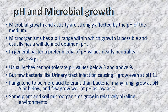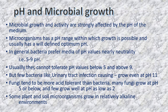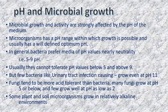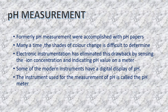Microbial growth and activity are strongly affected by the pH of the medium. Each microorganism has a pH range for maximum growth, defined as the optimum pH — generally in the neutral range of pH 5 to 9. However, there are exceptions: urinary tract infection organisms grow at more alkaline conditions, some fungi grow at pH as low as 2, and some plant and soil microorganisms grow in relatively alkaline environments.